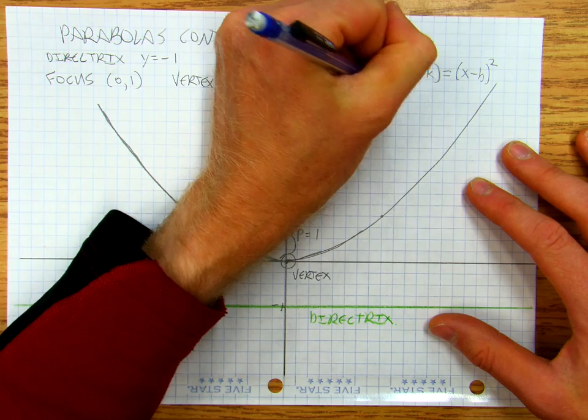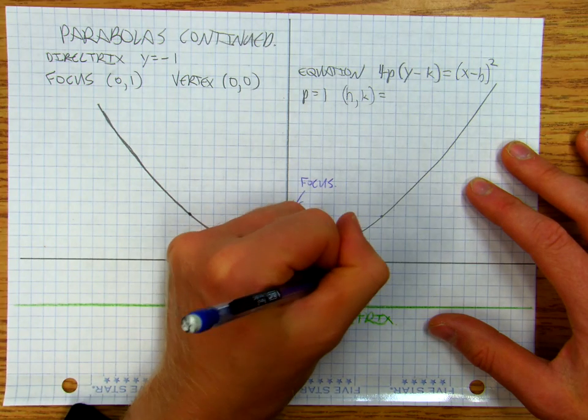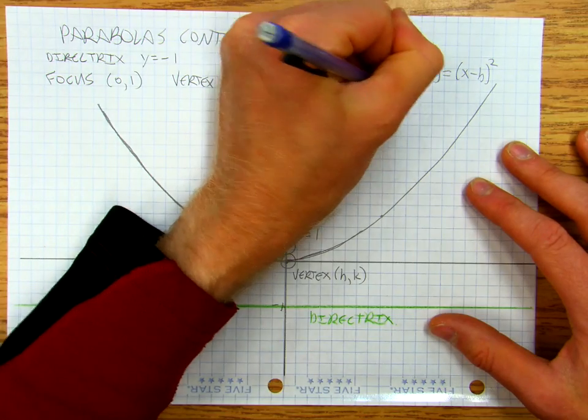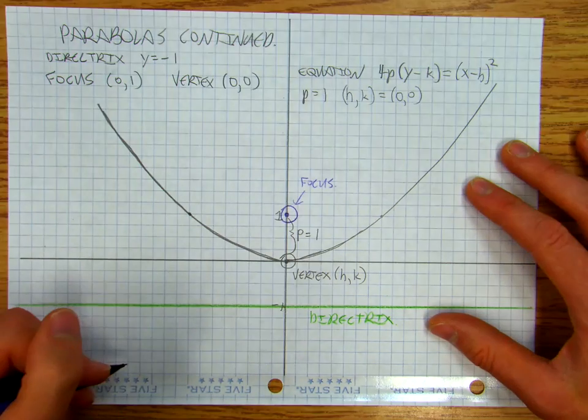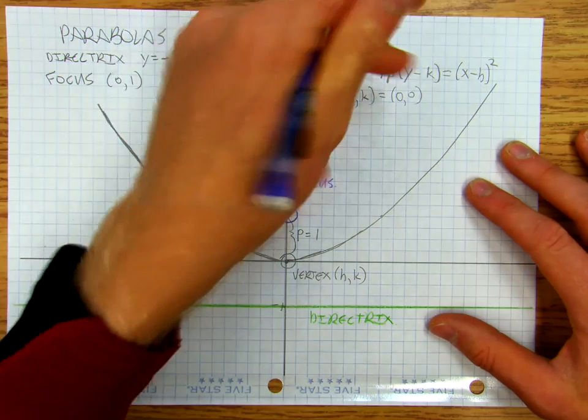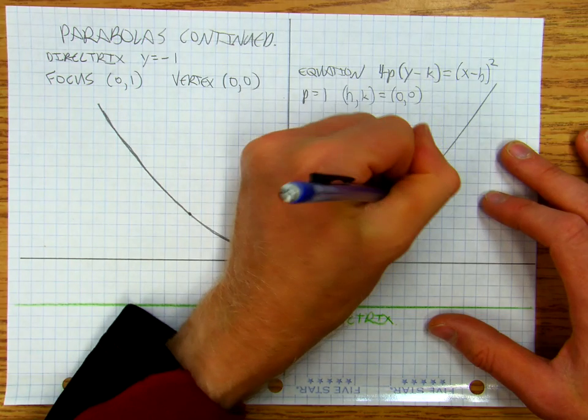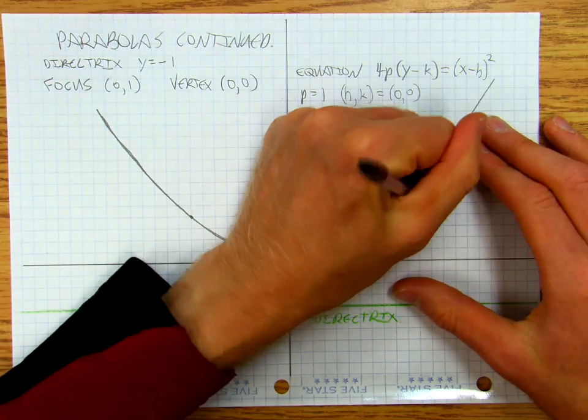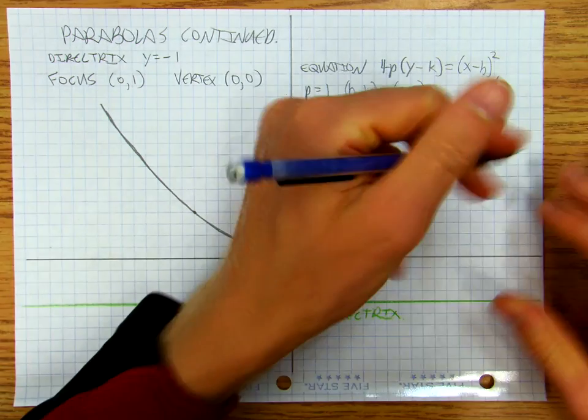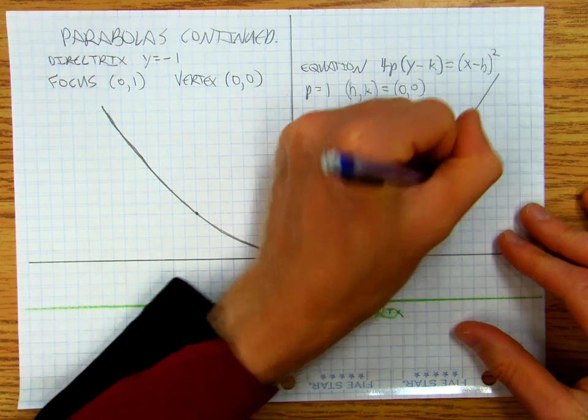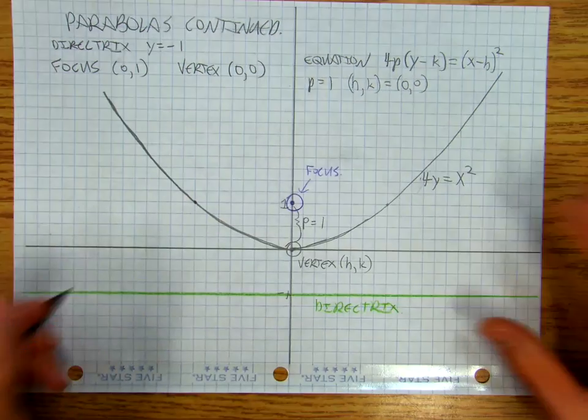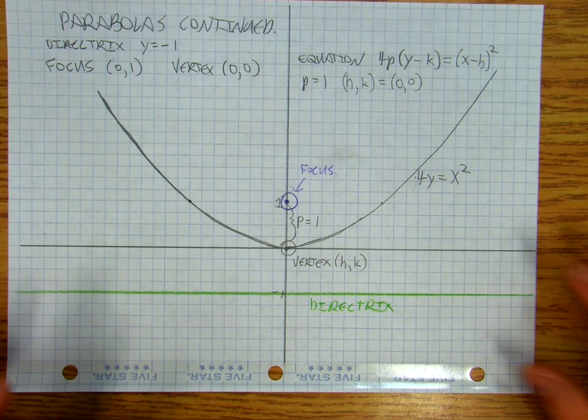is going to be, that's going to be (0,0) in this case. So the equation of this parabola here, this is 4y, 4y equals x squared. Pretty simple one.